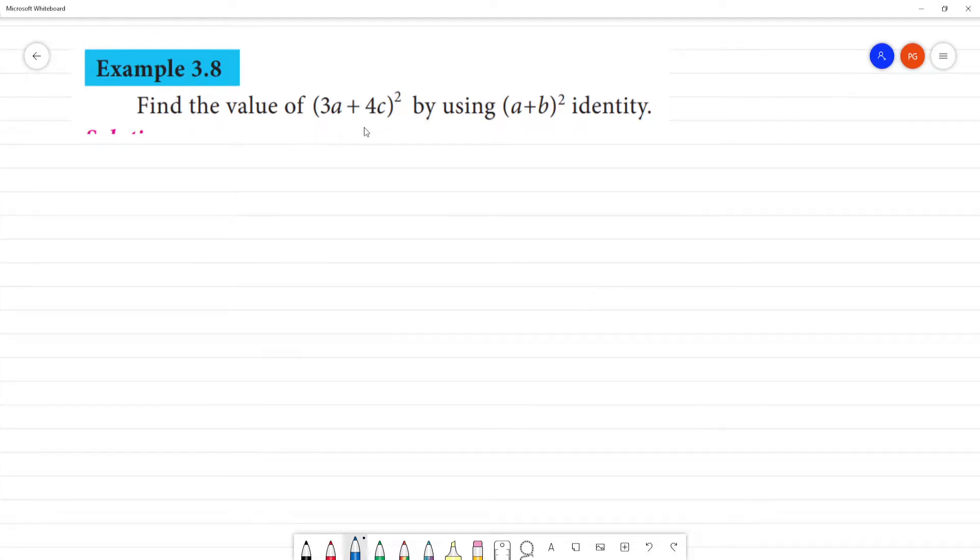Find the value of (3a + 4c)² by using the (a + b)² identity.